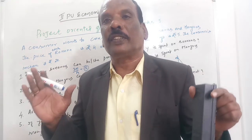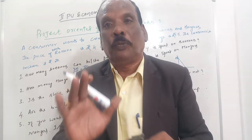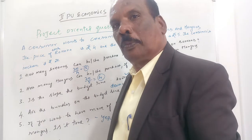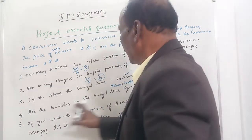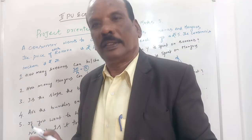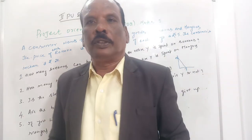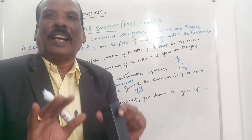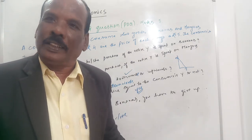To summarize: how many bananas can he purchase? Five bananas. How many mangoes? Four mangoes. Is the slope of the budget line downward sloping? Yes, it is downward sloping, not upward. Are the bundles on the budget line equal to the consumer's income? Yes. And if you want to have more bananas, you have to give up mangoes — yes, it is true. Write these answers and you will be given five out of five. Thank you.